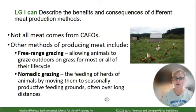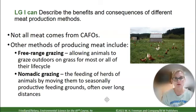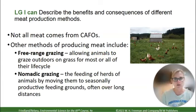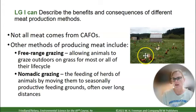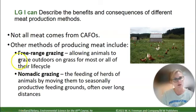Not all meat comes from CAFOs. Free-range options exist for chickens, beef, and other animals. Nomadic grazing involves feeding herds of animals by moving them to seasonally productive feeding grounds over long distances. In the U.S., free-range is the traditional, old-fashioned way of growing meat. Free-range chickens eating bugs and natural plants produce more nutritious eggs and meat, though it is more expensive.